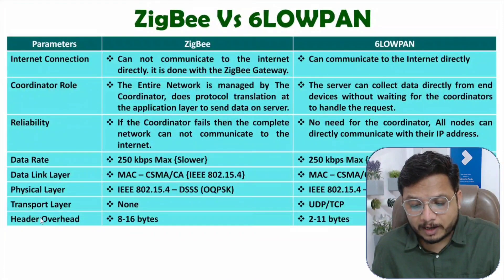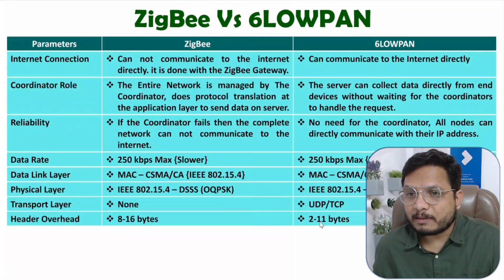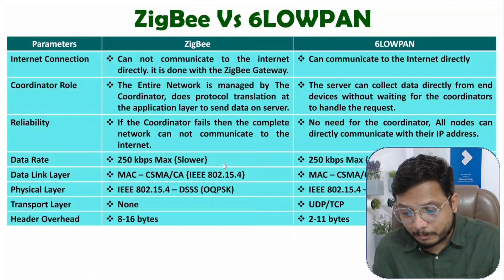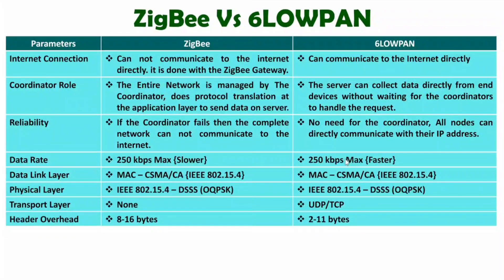The next parameter is header overhead. In ZigBee, the header overhead varies from 8 bytes to 16 bytes. While with 6LoWPAN, the header can be from 2 bytes to 11 bytes. Based on header overhead, the data rate is a bit slower with ZigBee compared to 6LoWPAN. The maximum data rate is 250 kbps with both, but 6LoWPAN requires fewer bytes of overhead — this overhead is redundant data, not actual payload. So with ZigBee, overhead is more, which is another reason why data rate is faster with 6LoWPAN.